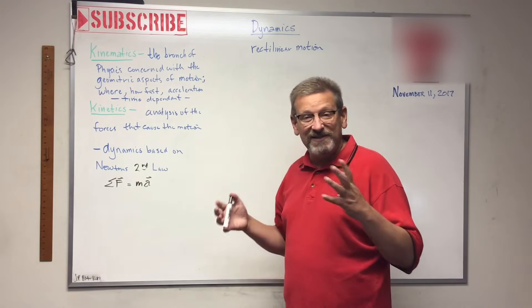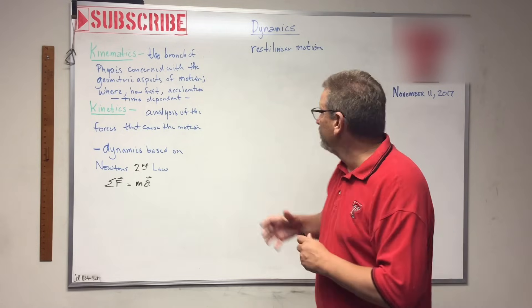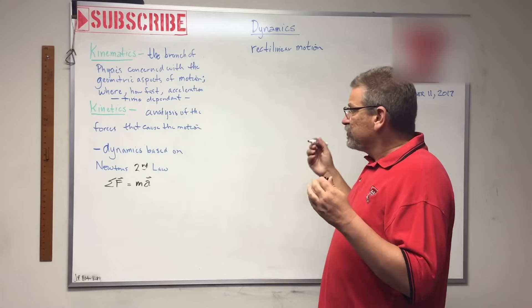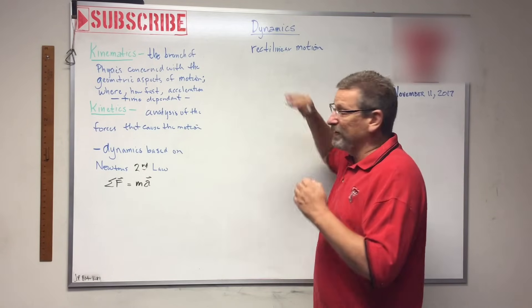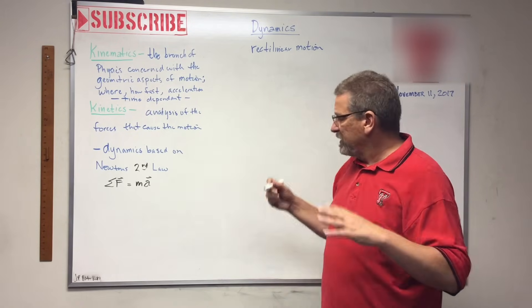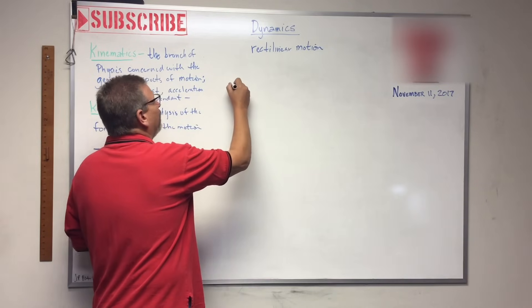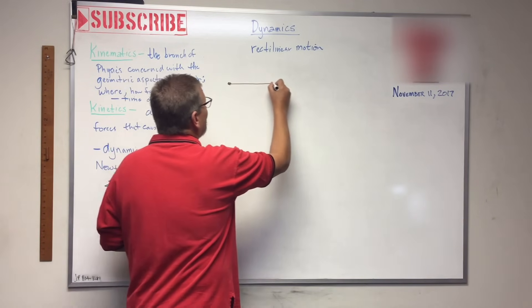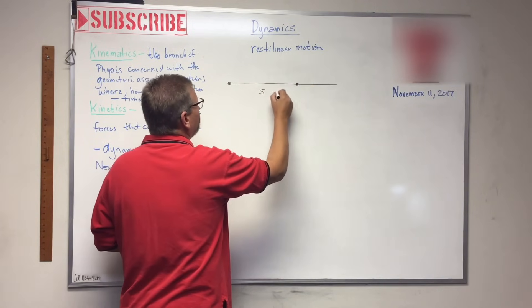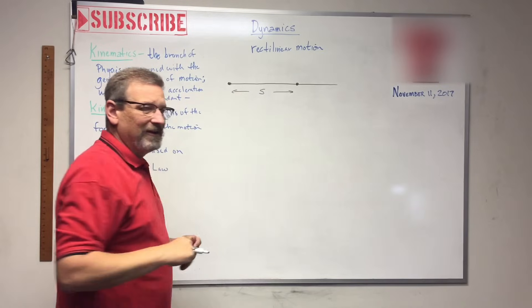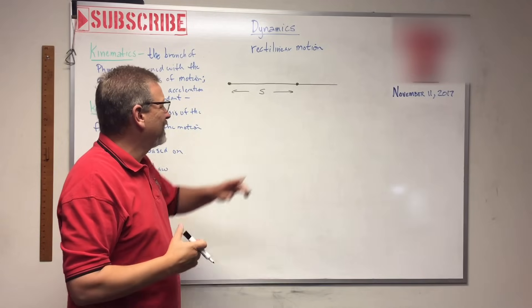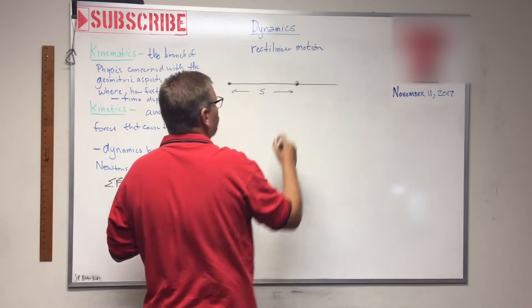Let's start talking about a particle and rectilinear motion. Rectilinear means just an x-y direction, a linear direction. Let's assume we have a particle that moves on a straight path. This is the distance s — not x — and s is just the location of that particle in space. So where is the location of our particle? This is our particle that we're concerned with.